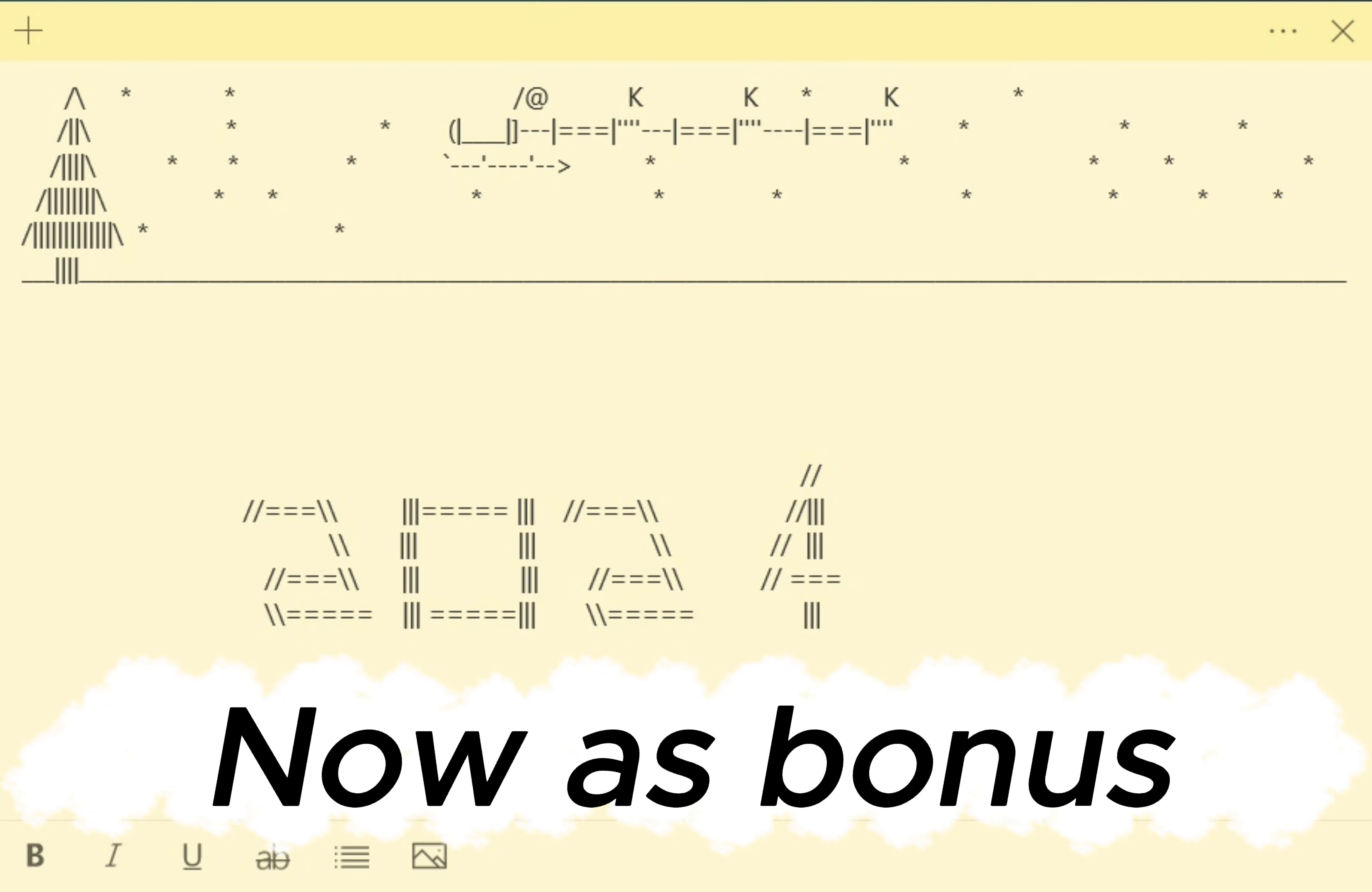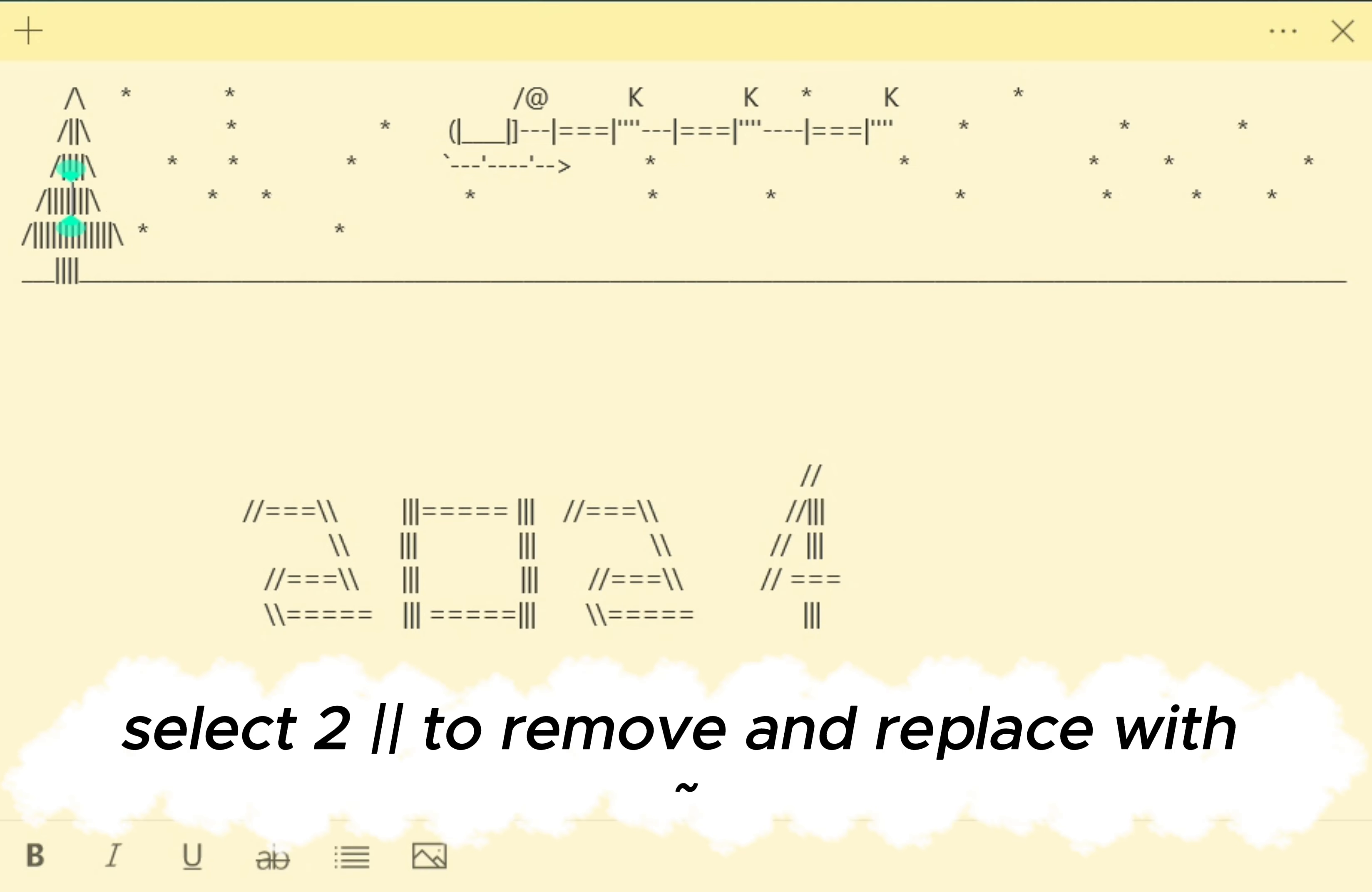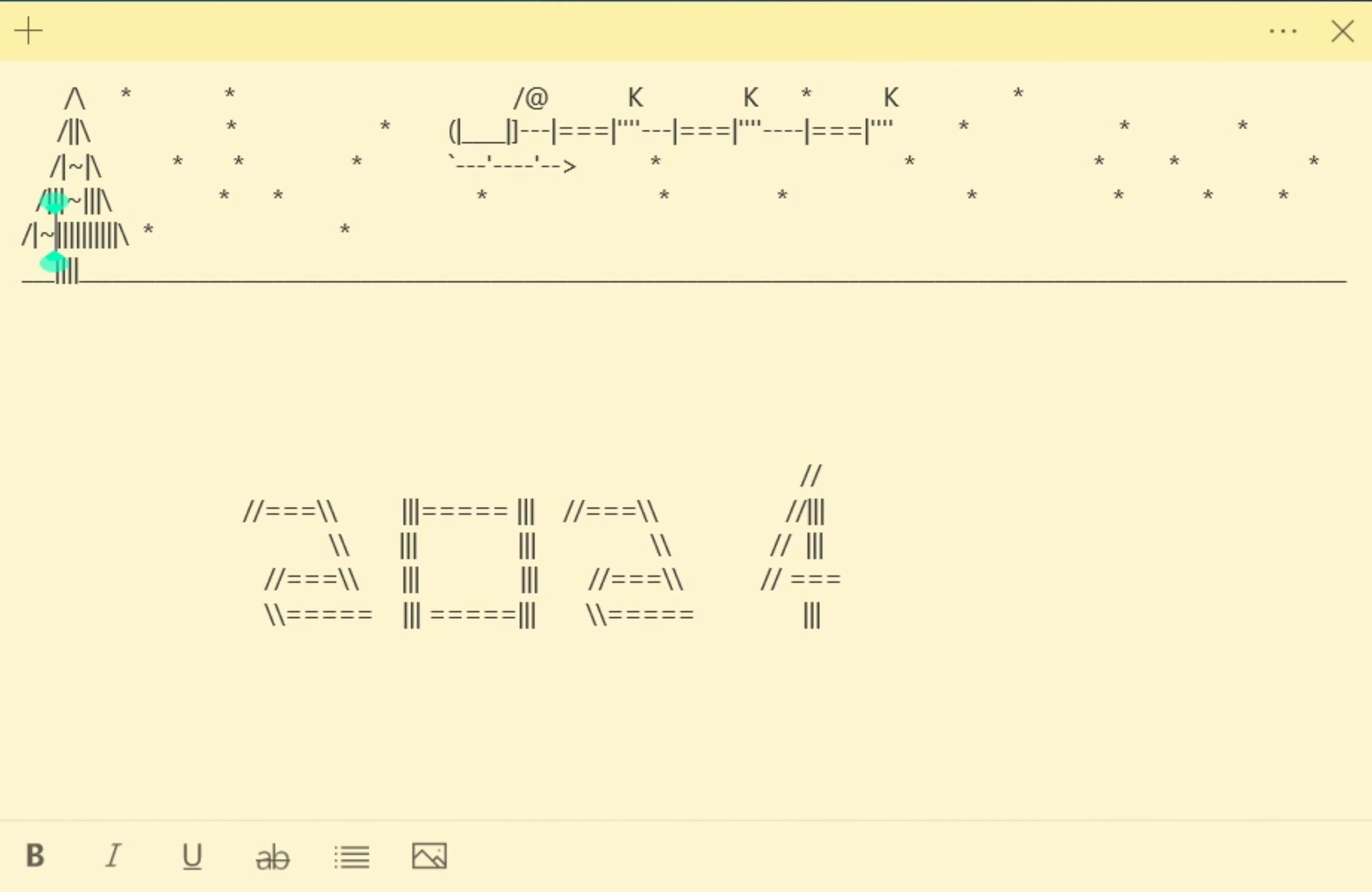Now as bonus, we will add some decorations to tree. Select to remove and replace with tilde. To put tilde do this. Hold shift and press this button under ESC. You can put anything you like on tree.